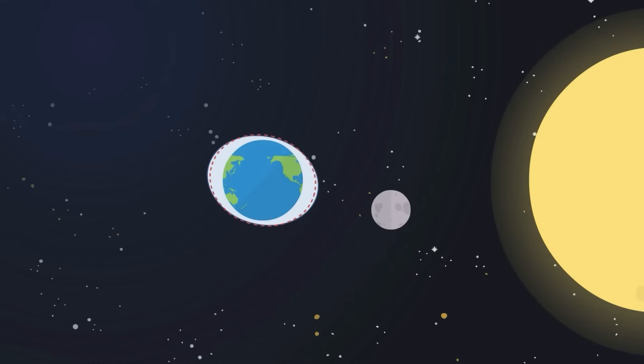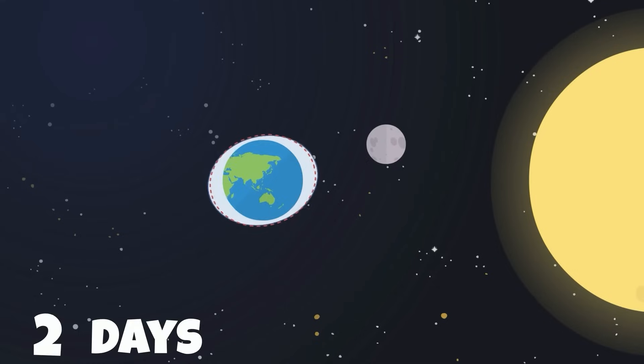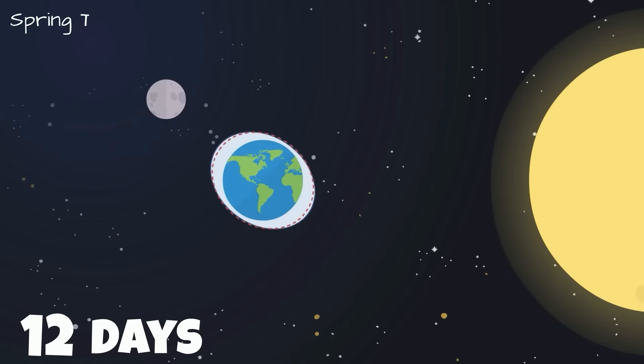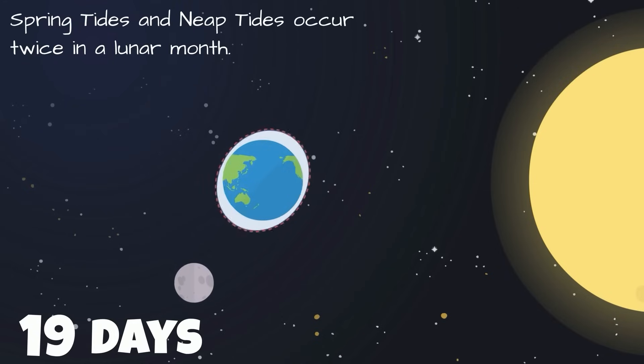It takes the moon approximately one month to complete one revolution around the Earth. This means that both spring tides and neap tides occur twice in a lunar month.